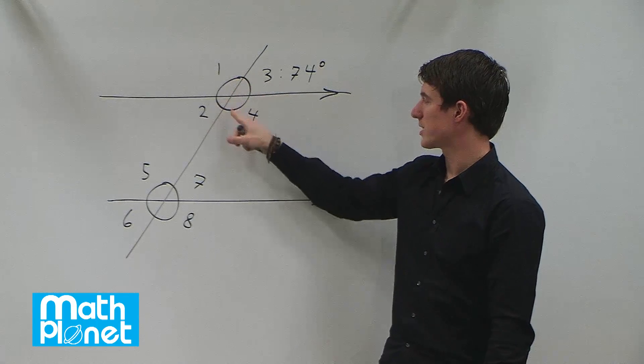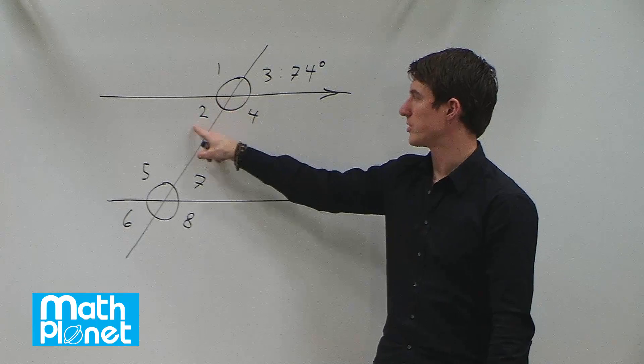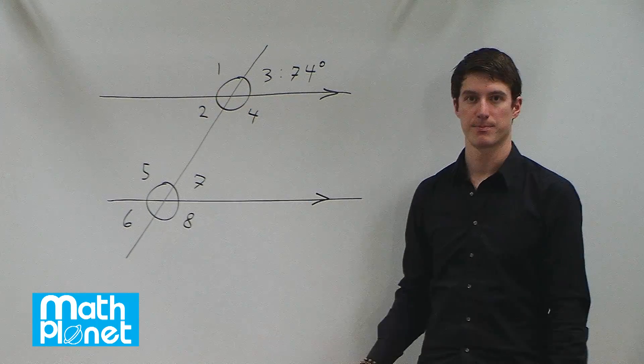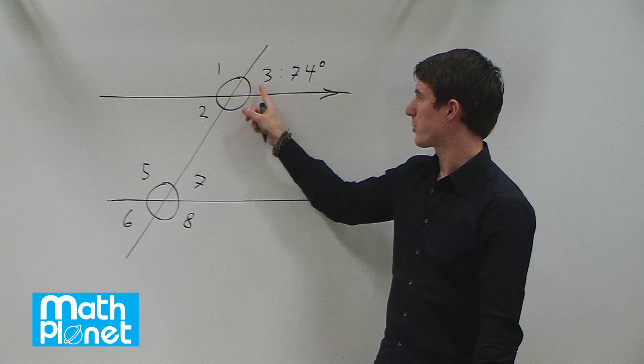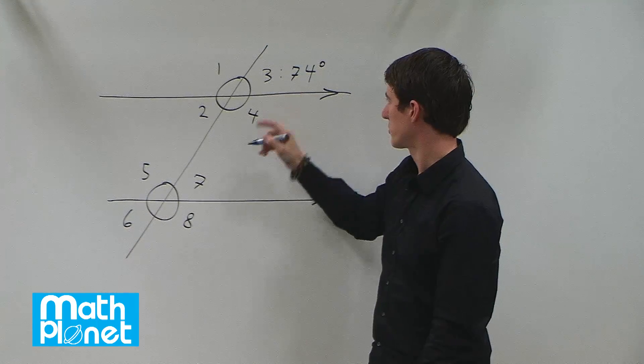Then 360 degrees minus these two gives us the sum of these. So if we find 360 degrees minus the sum of 74 times 2,